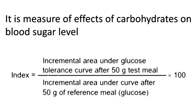Glycemic index is a measure of the effect of carbohydrates on the blood sugar level. When you take any meal, the extent of its effect on the blood sugar level is called the glycemic index. Some foods rapidly increase the blood sugar level — those have a high glycemic index — whereas some foods have very little effect on blood sugar and are called low glycemic index foods.